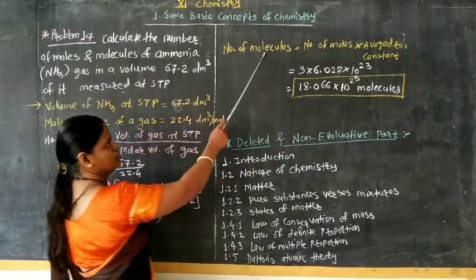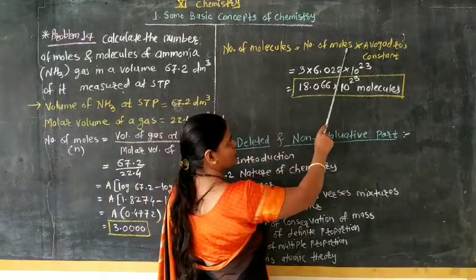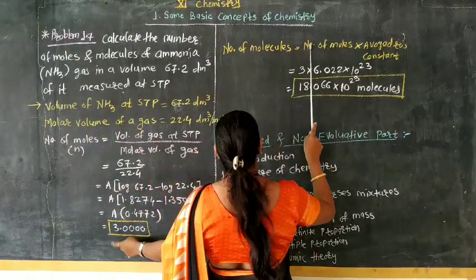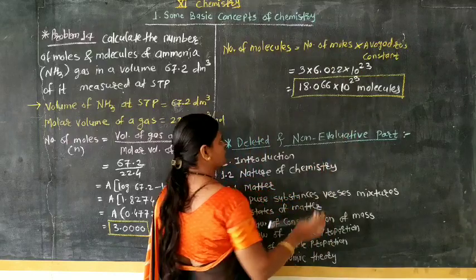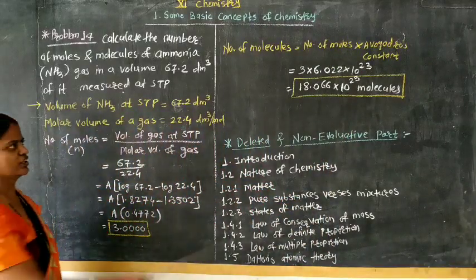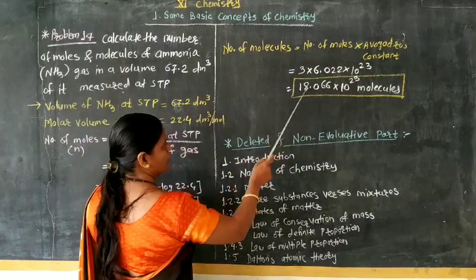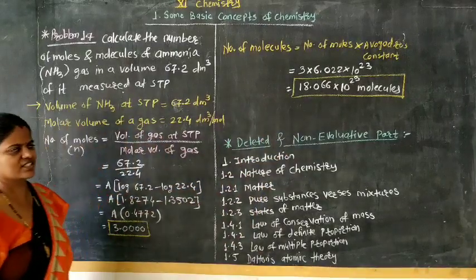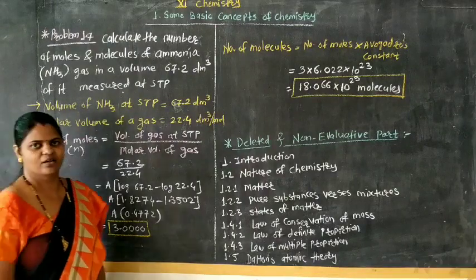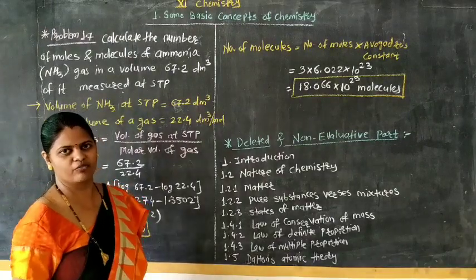The second: number of molecules of ammonia is equal to number of moles of ammonia into Avogadro's constant. Number of moles we calculated: 3 into Avogadro's constant 6.022 into 10 raised to 23. Direct multiplication 3 into 6.022. Answer is 18.066 into 10 raised to 23 molecules of ammonia. Here is the practical end of chapter number 1.